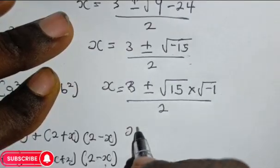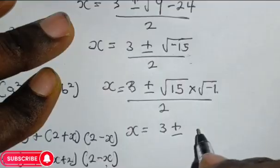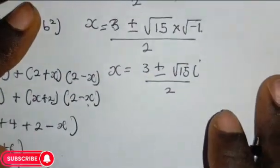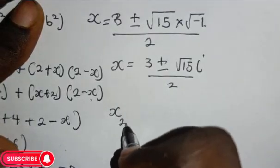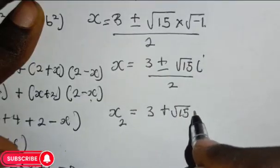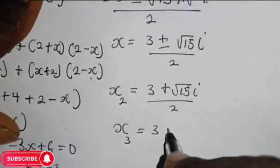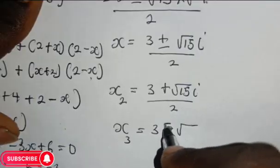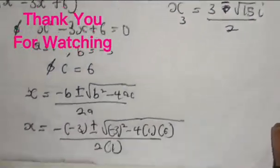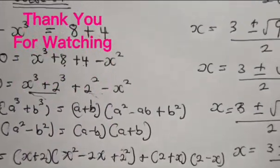Root of negative 1 equals iota, so we have root 15 iota divided by 2. We have gotten our two values for s, which are complex solutions. The first one is 3 plus root 15 iota divided by 2, and the second one is 3 minus root 15 iota divided by 2. These are the three values of x. Please don't forget to like, share, and subscribe to my channel. Thank you.